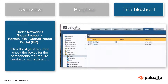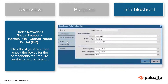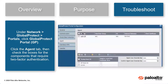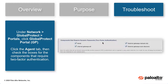Under Network, GlobalProtect, Portals, click the GP Portal, click the Agent tab, then checkmark the components that require two-factor authentication, such as Portal, Internal Gateways All, External Gateways Manual Only, and External Gateways Auto Discovery. This will ensure the best practice check passes.